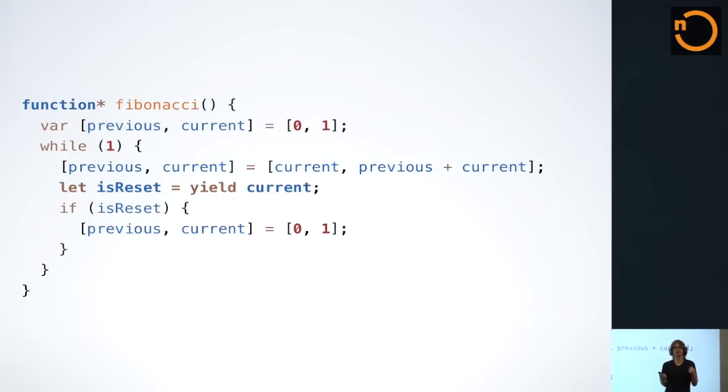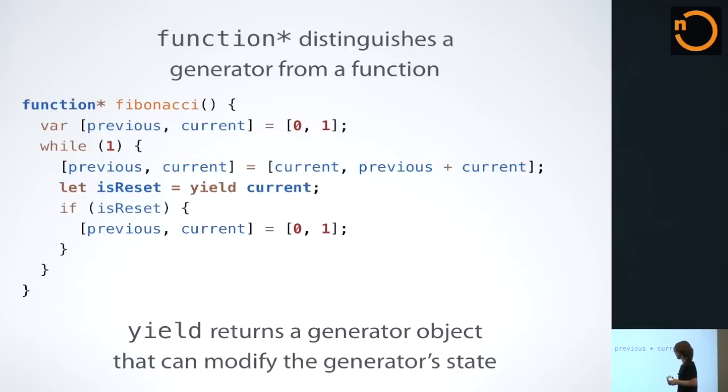As I mentioned, that generator object has two interesting methods on it, next and throw. You can also see that there is a way for that function to pass back any state that we want to modify. I have this line declaring this isReset variable, taking it and then using it to reset the state of the generator if the parameter that's passed is a truthy value. Being able to pass back values to the generator is quite interesting, as we'll see soon.